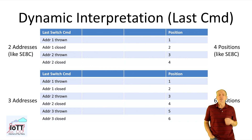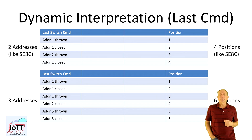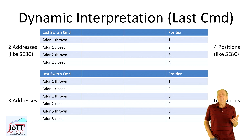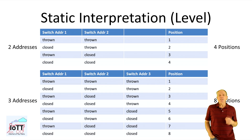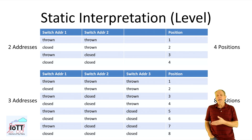Identical to the blue hat, it supports a dynamic and a static interpretation of switch commands. The dynamic interpretation is identical to the SE8 — the aspect is set based on the last received switch command, so two addresses allow for four and three addresses for six different aspects. The static interpretation takes the position of all switches into consideration, resulting in four and eight aspects for two and three switch addresses.